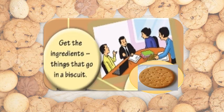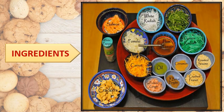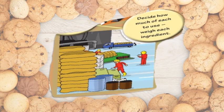Now, get the ingredients — that is, things that go in a biscuit. We are going to prepare biscuits, so we need some materials. Those are the ingredients. For example, for biscuits we need flour, oil, milk, sugar, and water. All these are called ingredients.